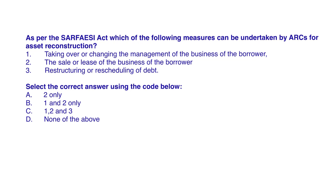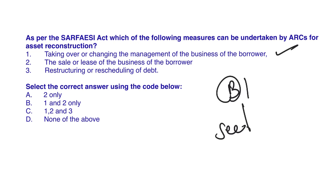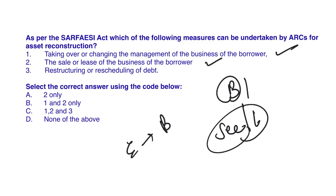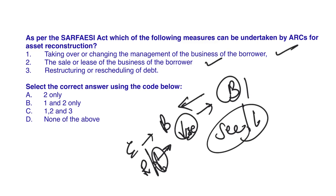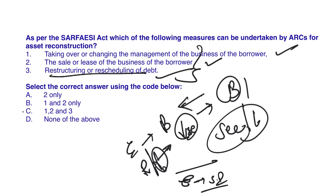The next question: as per the SARFAESI Act, which measures can be taken by Asset Reconstruction Companies for asset reconstruction? An ARC can take over a company or change the management of a borrower's business. They can sell or give the business for release. They can enter into a settlement with a borrower, restructure the debt by reducing or cancelling interest, reschedule repayment, or enforce the security interest. As all three statements are correct, the answer is 1, 2 and 3.